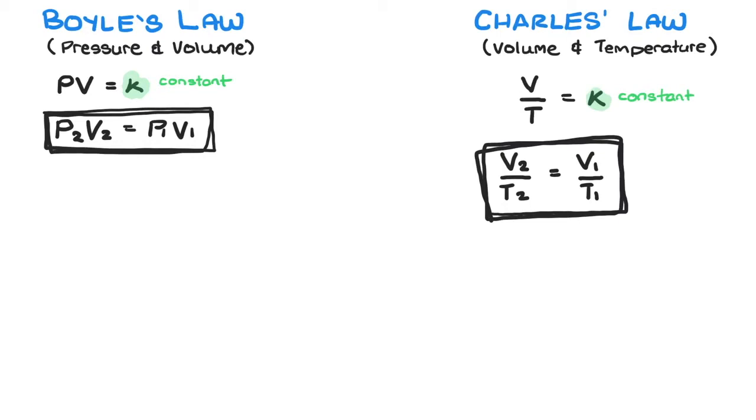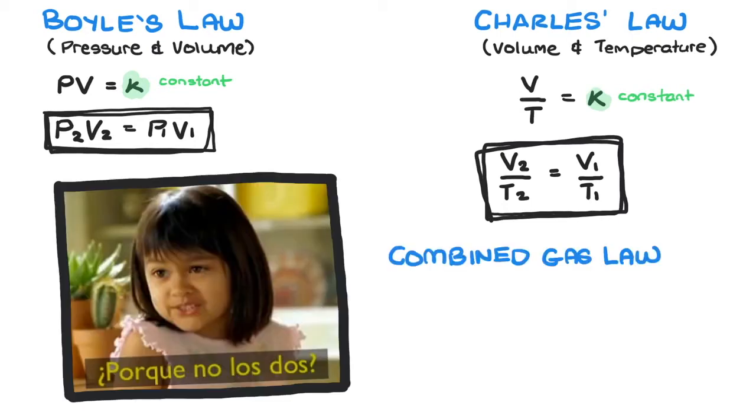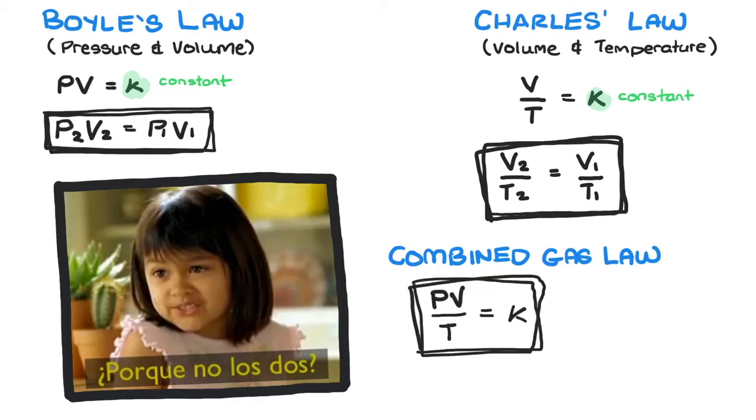But what if we made a mega-equation in which all are related? This is known as the combined gas law and is expressed as PV over T equals K, in which K is a constant.